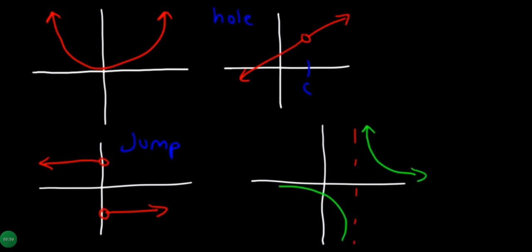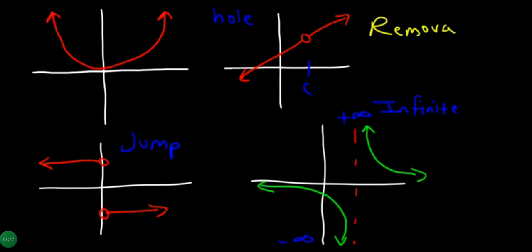This is the right style — we were discussing infinite discontinuity. Whether as x approaches from the left or right, the limit goes to positive infinity or negative infinity. It is a hole, removable discontinuity, no hole, removable discontinuity, jump, and infinite discontinuity.